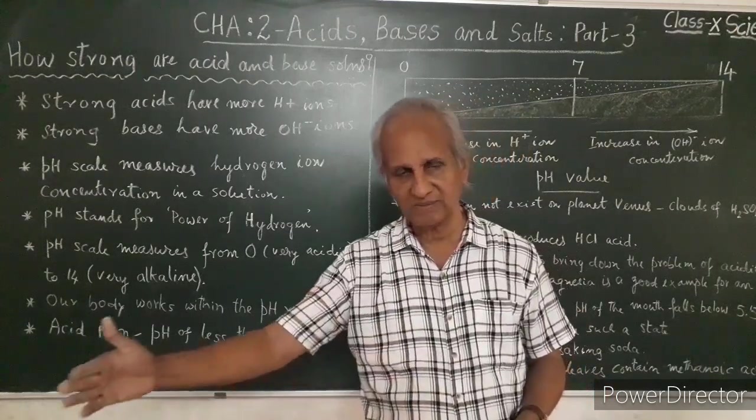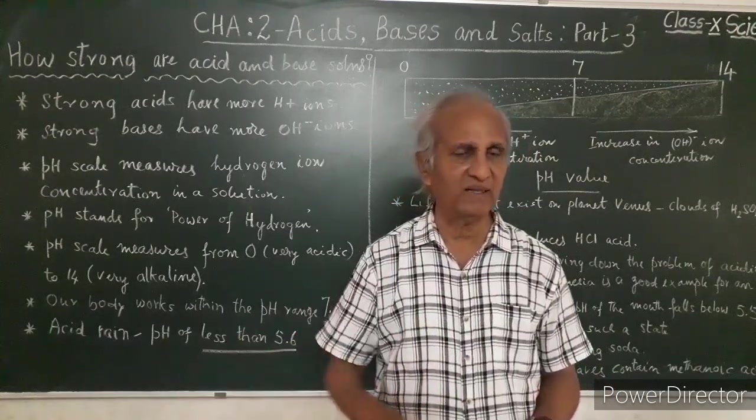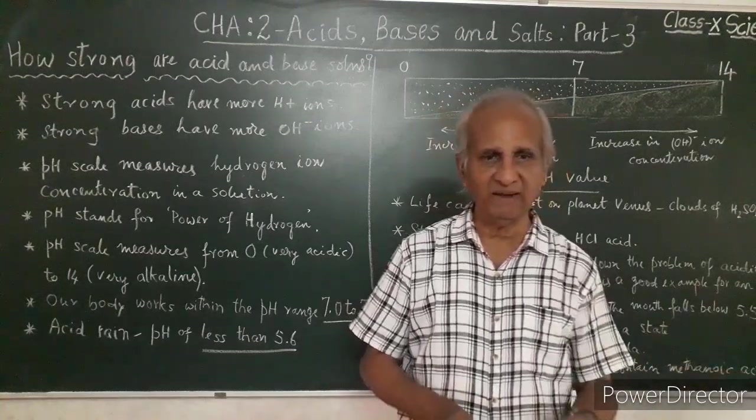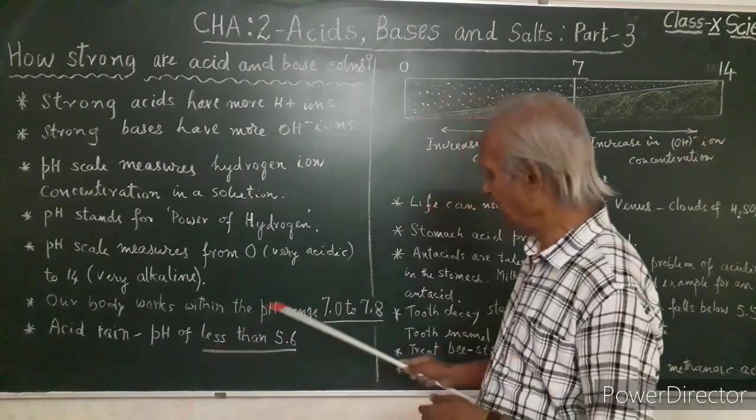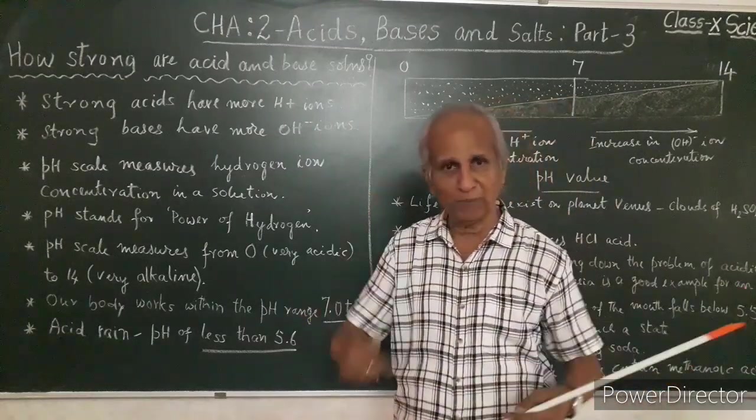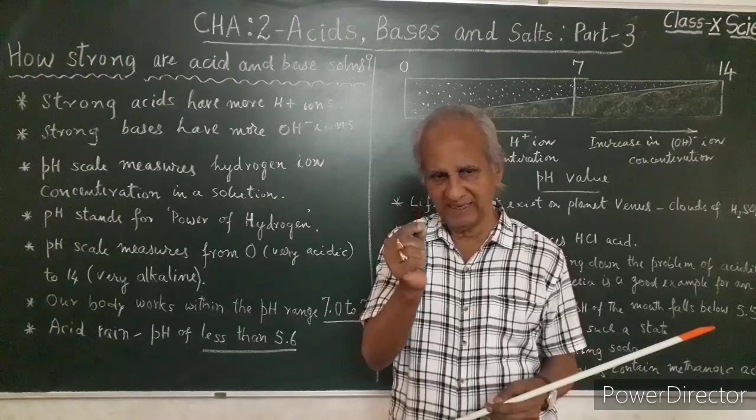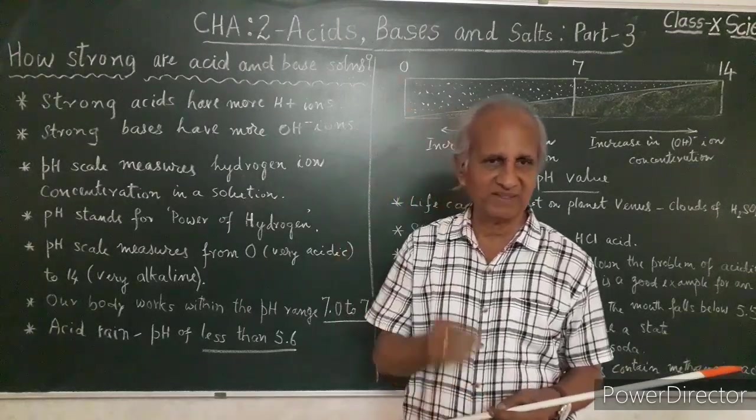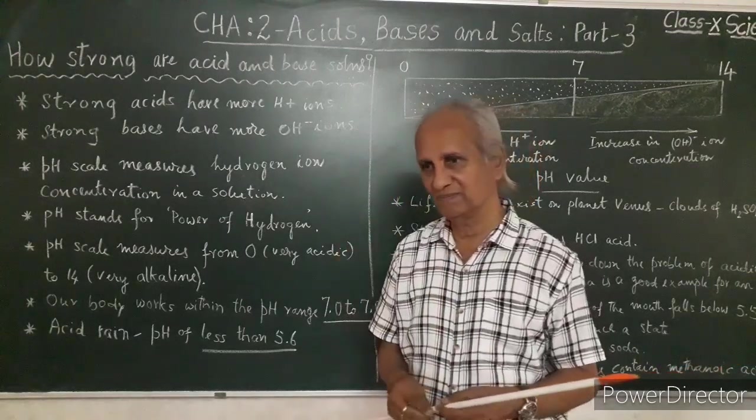Our body works within pH range 7 to 7.8. Neither it is towards the alkaline end nor towards the acidic end. It stays somewhere in between 7 to 7.8. Seven is normal so our body is slightly alkaline.